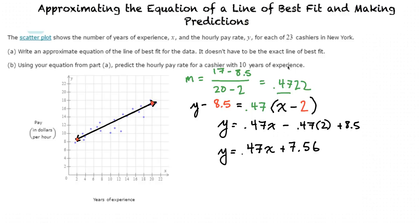So after doing that, we get y is equal to 0.47 times 10 plus 7.56. After doing the math, we get that y equals 12.26. This means that a cashier with 10 years of experience will have an hourly pay rate of $12.26 per hour.